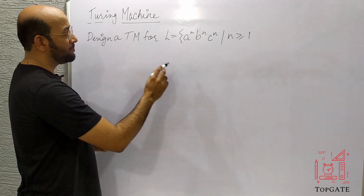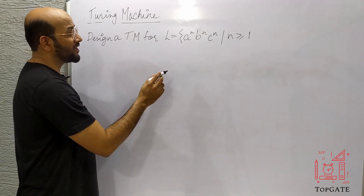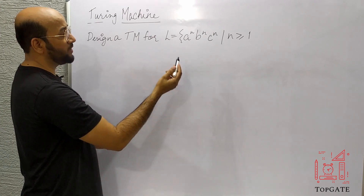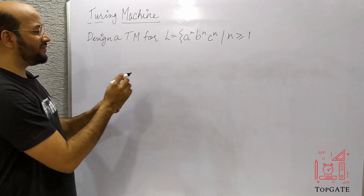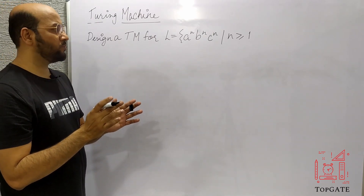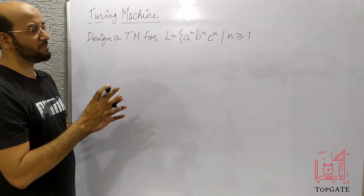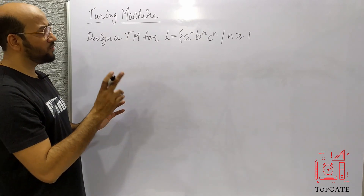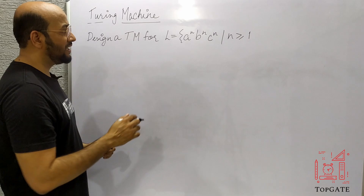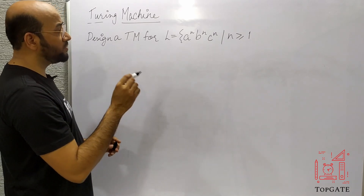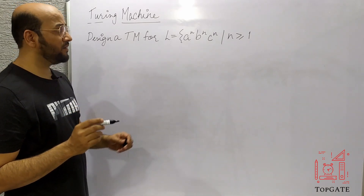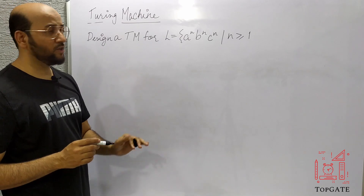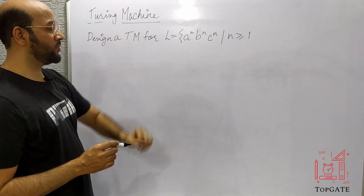For this particular language, the PDA is not capable of doing this. Because certain comparisons need to be done — if there is only a single comparison needed, we can solve it with a PDA. But if there are more than one comparison needed, it cannot be done with a PDA. So we have to use a Turing machine.